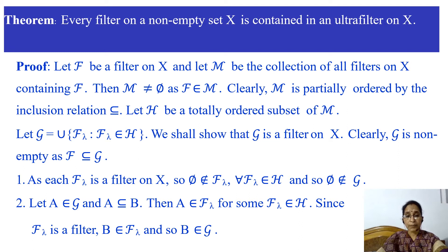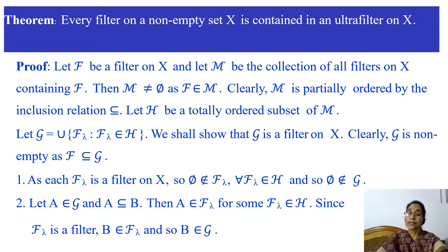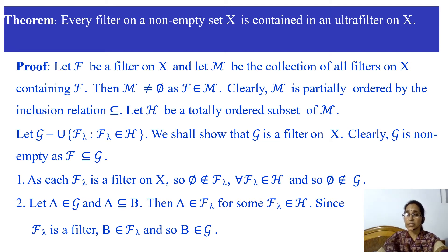Now we check the second property: if A belongs to G and A is contained in B, then by definition of G, A belongs to F_lambda for some F_lambda in H. Since F_lambda is a filter and A belongs to F_lambda and A is contained in B, by definition of filter, B belongs to F_lambda. And if B belongs to F_lambda for some F_lambda in H, so B belongs to the union G.